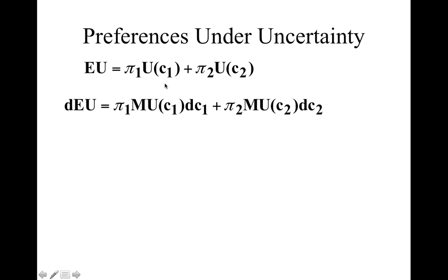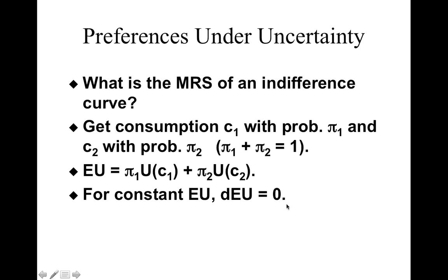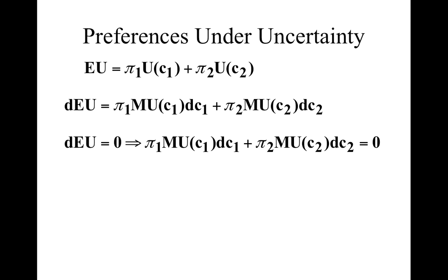This is basically the weighted average of marginal utilities that you can expect when you change consumption in state 1 by 1 unit or consumption in state 2 by 1 unit. This total change should be 0 if we stay on the same indifference curve because total expected utility is constant there. Since we say that this sum equals DEU — where D represents a very small, minute change — moving on an indifference curve does not change total utility. Therefore, this sum, which is the weighted average of marginal utilities multiplied by the changes, should equal 0.